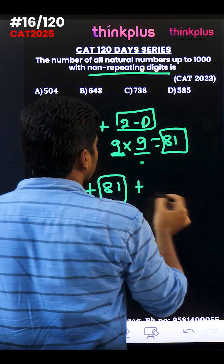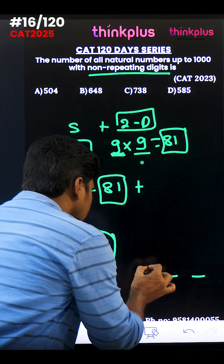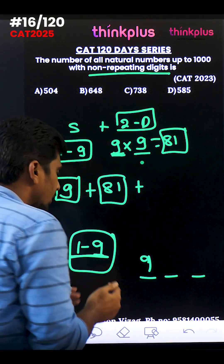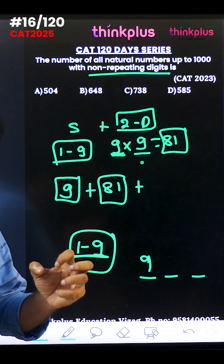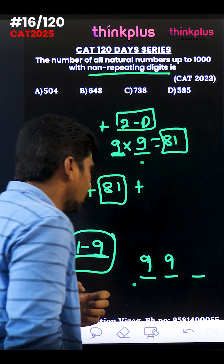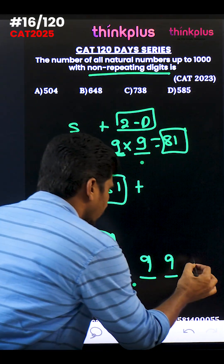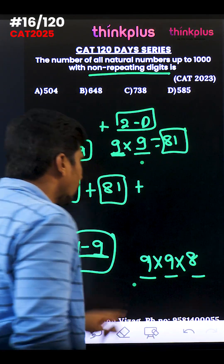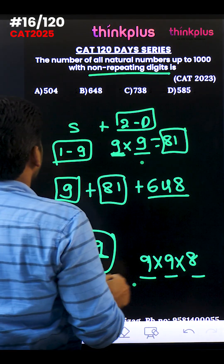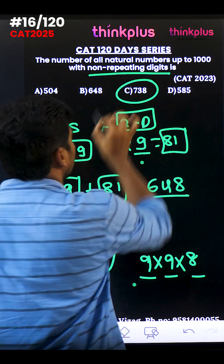For three digit numbers: the first digit can be filled with anything from 1 to 9, so 9 chances. The second digit also has 9 chances — zero can't be used in first place but can be used in second place, and one digit from 1-9 is already used, leaving 9 options. The third digit has 8 remaining chances. So three digit numbers = 9 × 9 × 8 = 648. Final answer: 9 + 81 + 648 = 738.